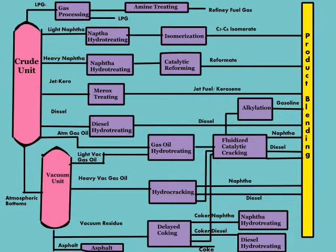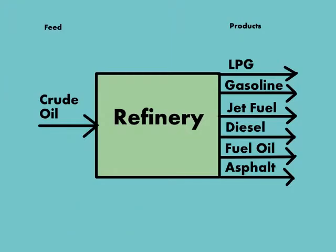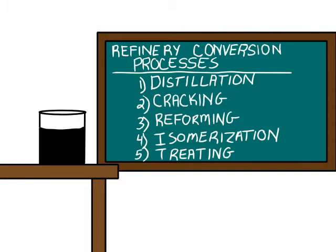Refineries are complex chemical processing facilities that convert crude oil to higher value products like gasoline, diesel, and jet fuel. There are five primary activities that go on in the conversion of crude oil to useful petroleum products.